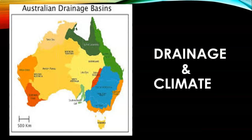The Eastern Highlands extend for about 3,860 km along the eastern edge of Australia. They stretch from Cape York in the north to Tasmania in the south. They are also known as the Great Dividing Range, as they separate the west and east flowing rivers. The Australian Alps mountain range is the highest mountain range of Australia and is covered with ice. The highest peak of this range is Mount Kosciuszko at 2,230 metres, located in New South Wales.